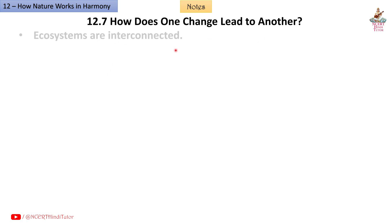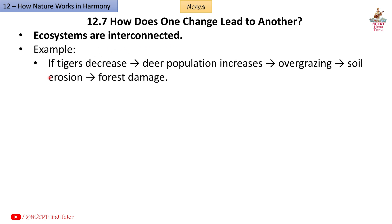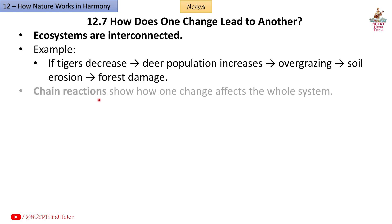12.7: How does one change lead to another? Ecosystems are interconnected. Example: if tigers decrease, the deer population increases, leading to overgrazing, soil erosion, and forest damage. These chain reactions show how one change affects the whole system.